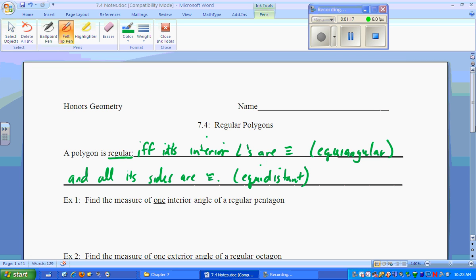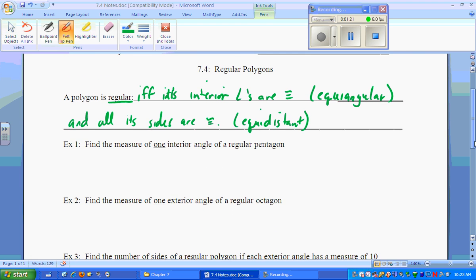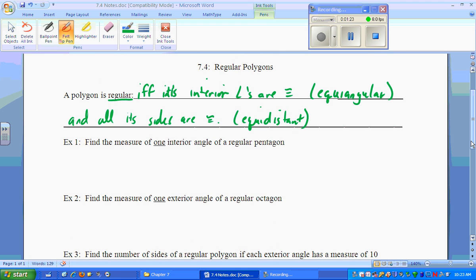Knowing that, we're looking at regular polygons today. In our book, if it doesn't say regular, they're just assuming regular unless they give you a picture. The first one says find the measure of one interior angle of a regular pentagon.